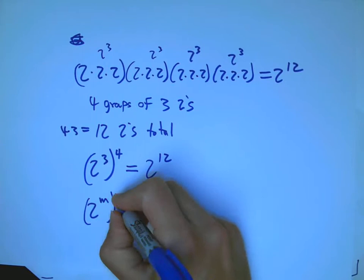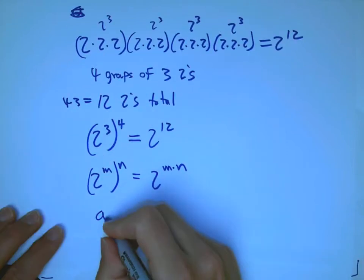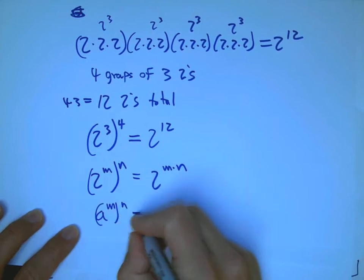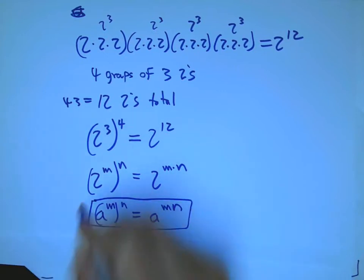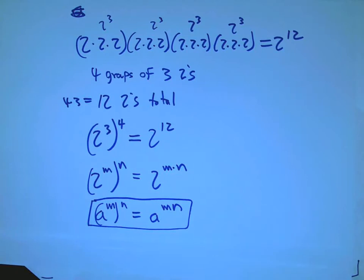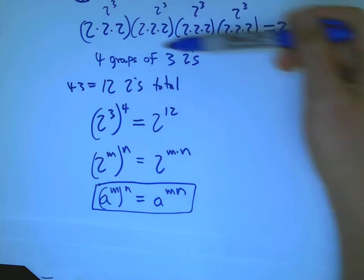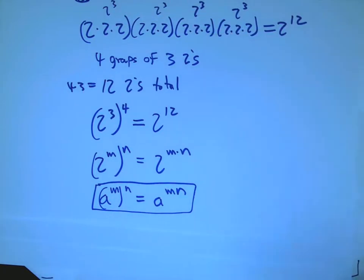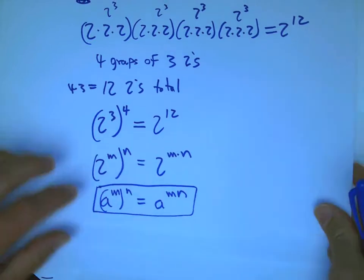Again, it's about grouping and counting. The general rule is: 2 to the m, all raised to the n, equals 2 to the m times n — and it doesn't matter what the base is. It's not something you just memorize; it's really about grouping and counting. You can always remember it by writing down an example like this, using simple numbers like 2, 3, and 4.